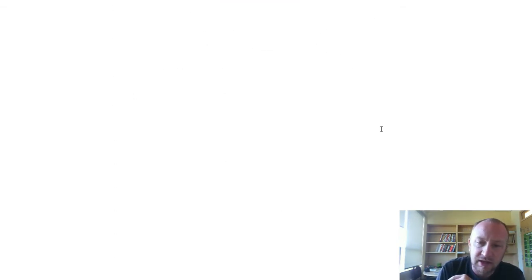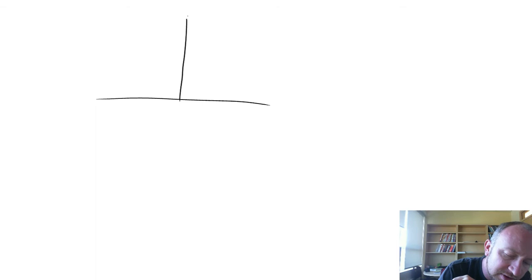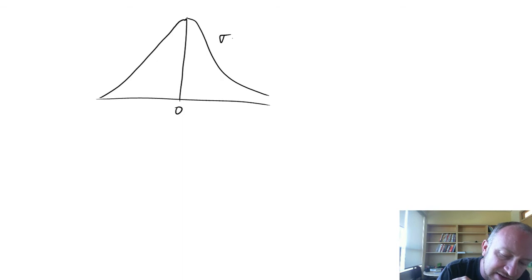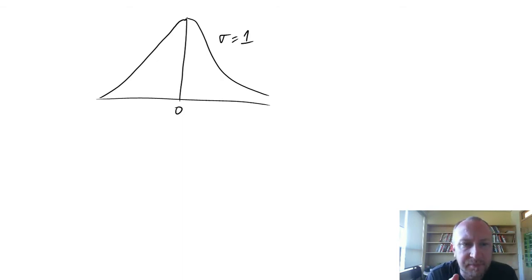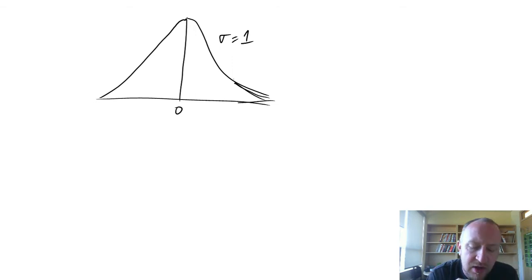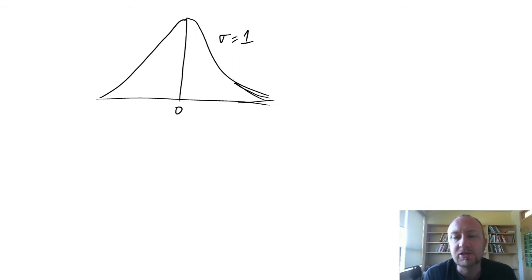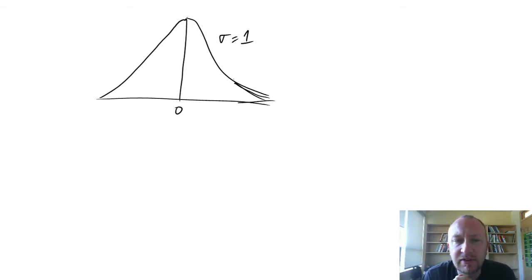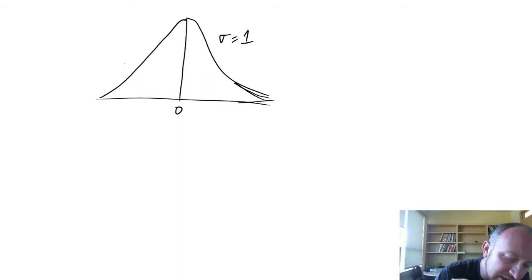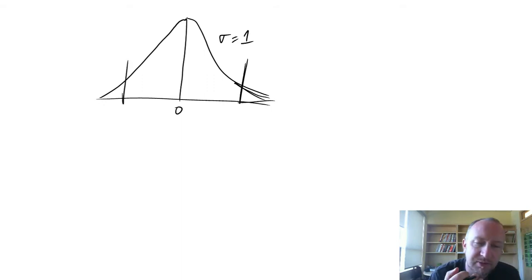Let me scroll down here and give a brief discussion on what it means to estimate an interval. Starting with the standard normal distribution — which has a mean of zero and a standard deviation equal to one — using the Z tables we covered in module 7, we can define certain regions of that distribution.